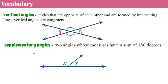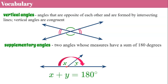Then we have supplementary angles. These are two angles whose measures have a sum of 180 degrees. We always have a straight line formed when we put supplementary angles together. I have angle X and angle Y — a bisecting ray is making two angles, and the ray touches the line, forming a straight angle of 180 degrees. Together, X and Y are supplementary and have a sum of 180 degrees.